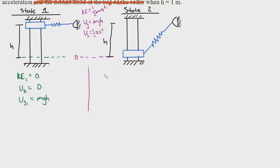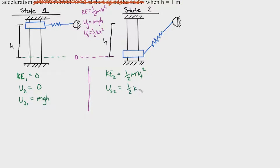For state two, there is no gravitational potential energy because we defined point C as our zero-potential line. It does have kinetic energy because it has accelerated from state one to state two. The spring also has potential energy because it has stretched from state one to state two. So KE₂ equals one-half mv_f squared, spring PE₂ equals one-half k times delta x squared, and Ug₂ equals zero.